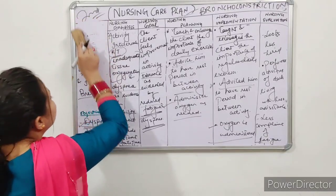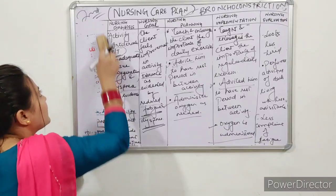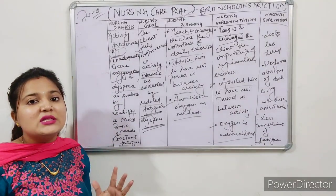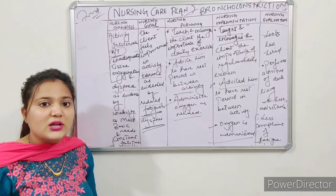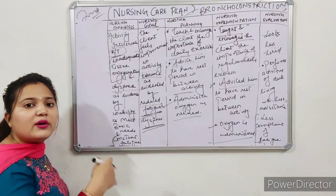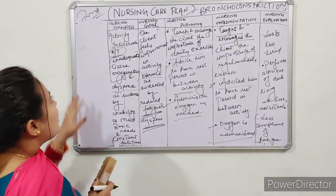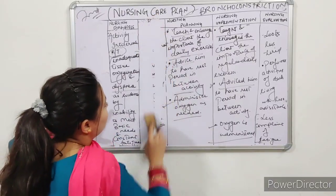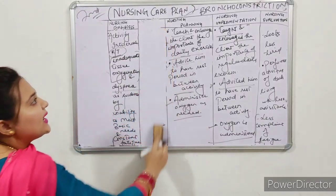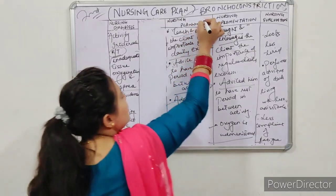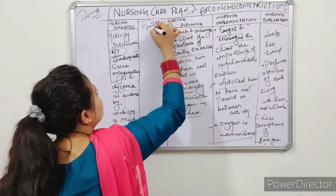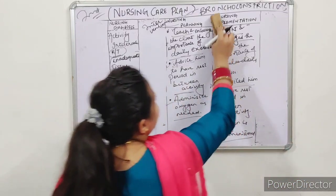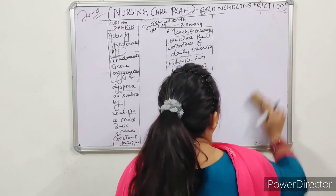Now for second year nursing care plan: in second year you cannot write such a long nursing care plan — you would not even finish the exam. The format changes. Assessment is skipped because in second year you are studying disease conditions, and you already have clinical features, signs, and symptoms written separately — so there is no need to write assessment again. In second year NCP you start directly from Nursing Diagnosis, then Nursing Planning or Interventions, Evaluation, Implementation, and there is an additional column — Rationale.